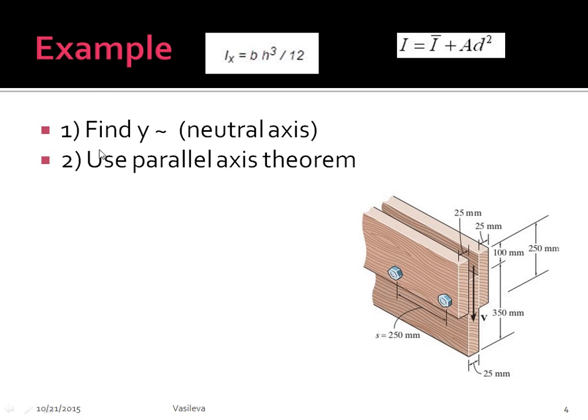So in order to do that, we need to find y bar, not squiggle, y bar, or the neutral axis. So where is y bar located? And then we need to use the parallel axis theorem to find the moment of inertia of the total body.